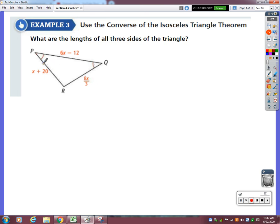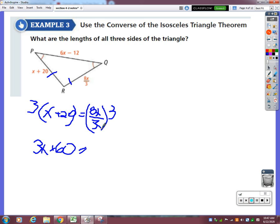We can do the opposite. If we know that these two base angles are congruent, then I know that this side and this side are congruent. So that means x plus 20 equals 8x over 3. Nobody likes fractions, so I'm going to get rid of this fraction by multiplying both sides by 3. If I take this side and multiply it by 3, I get 3x plus 60. If I take this side and multiply it by 3, the threes cancel and I get 8x. So that means 5x equals 60.